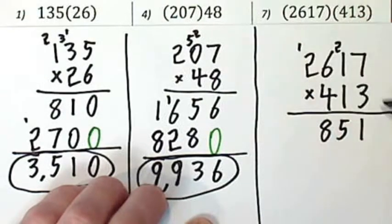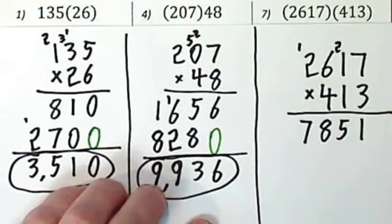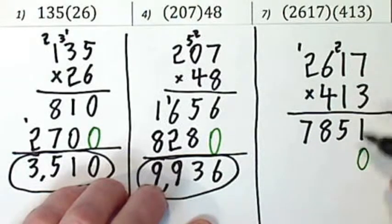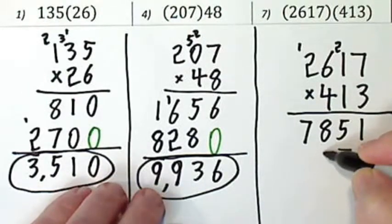Eighteen. Carry the one. That's six, seven. Put your zero here before you start. One times seven is seven. One times one is one.